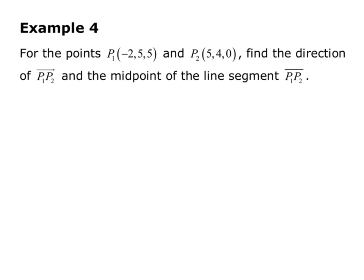Example 4 from the guided notes. For the points P1 negative 2, 5, 5, and P2 defined as 5, 4, 0, find the direction of vector P1 P2 and the midpoint of the line segment P1 P2. So this is really two separate problems, because the direction vector and the midpoint are completely separate concepts.